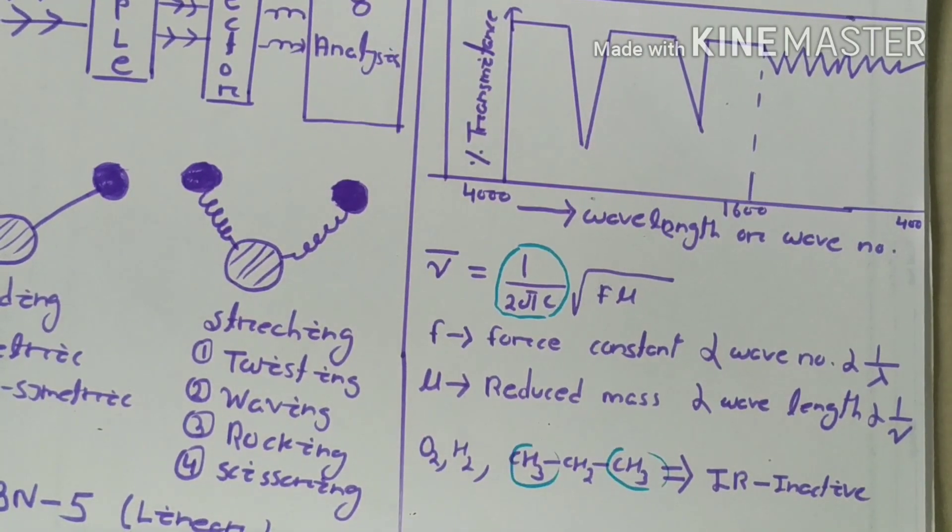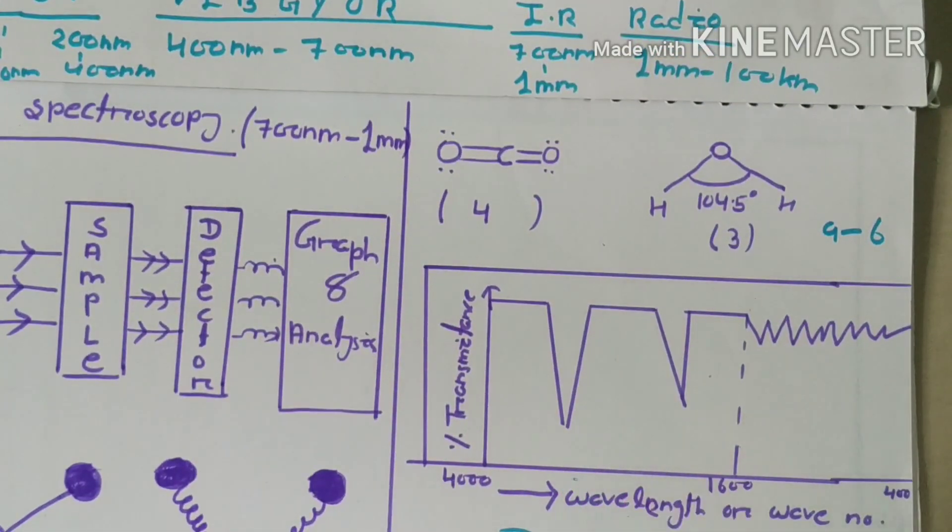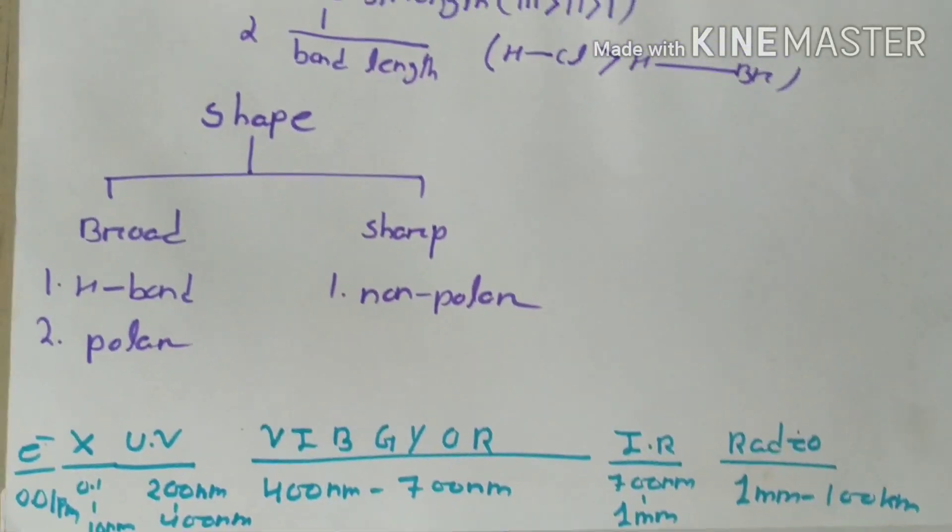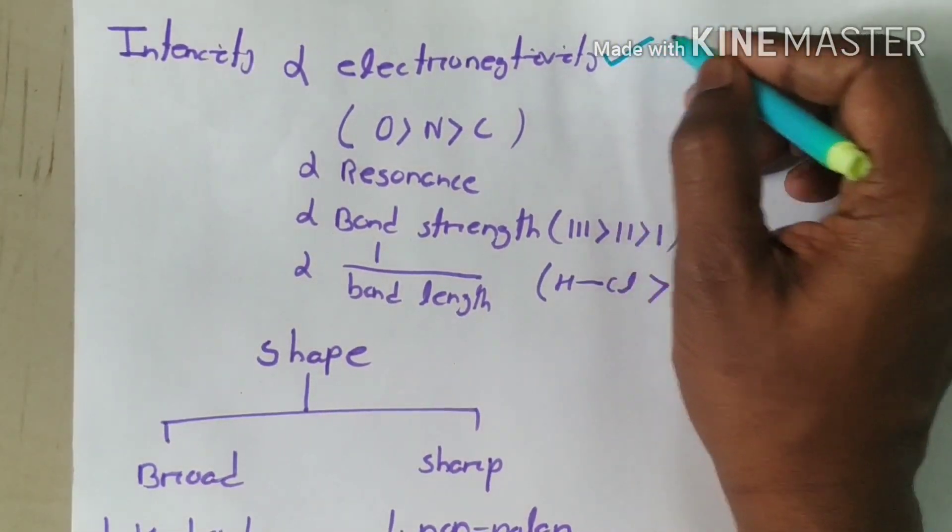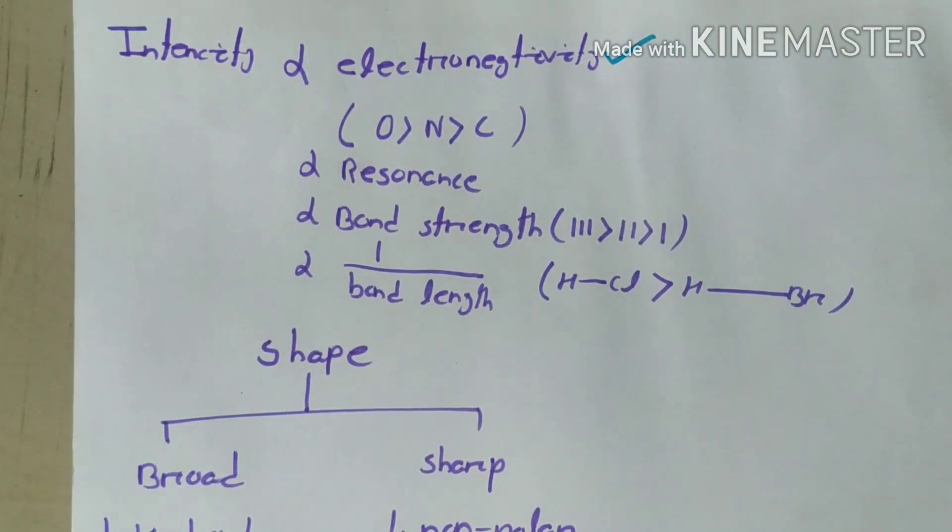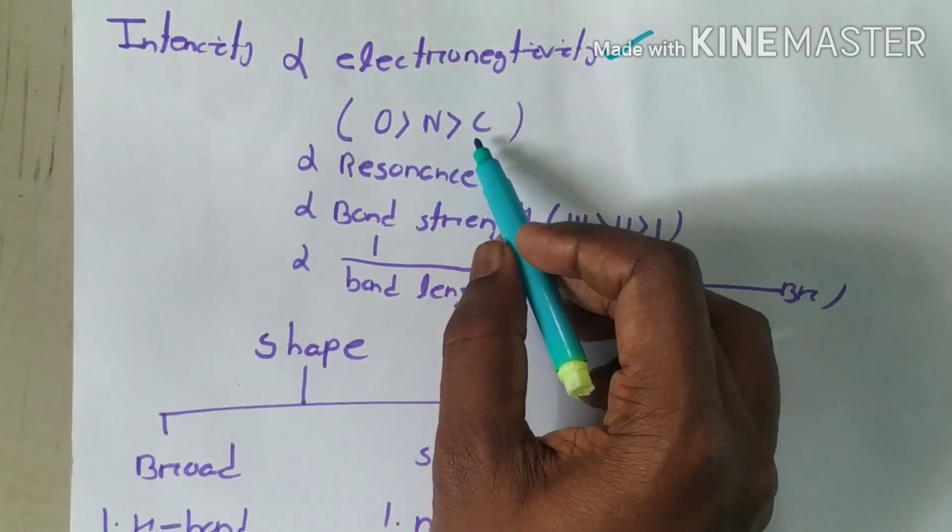The intensity of the peak depends on various factors. As electronegativity increases, the intensity increases. For example, oxygen has more electronegativity than nitrogen and carbon.